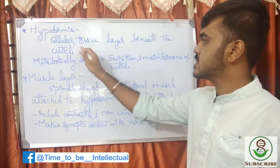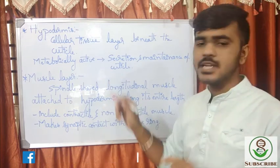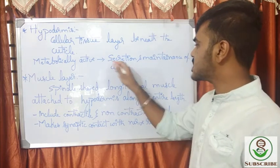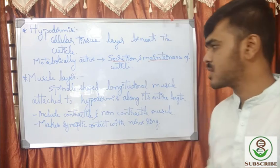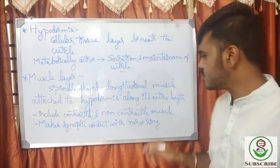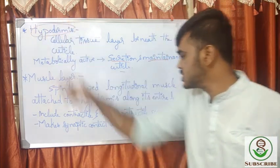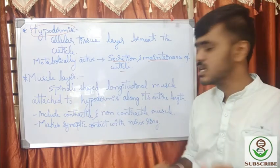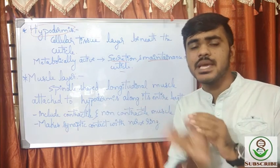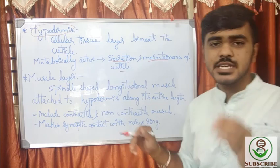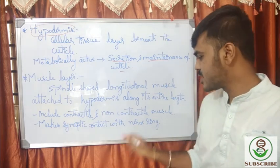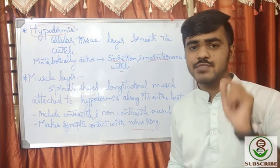The hypodermis is the cellular tissue layer below the cuticle. It is metabolically very active, continuously secreting and maintaining the cuticle of the nematodes. Below that is the muscle layer — spindle-shaped longitudinal muscles attached to the hypodermis along its entire length. These are contractile or non-contractile muscles that make synaptic contact with the nerve ring.